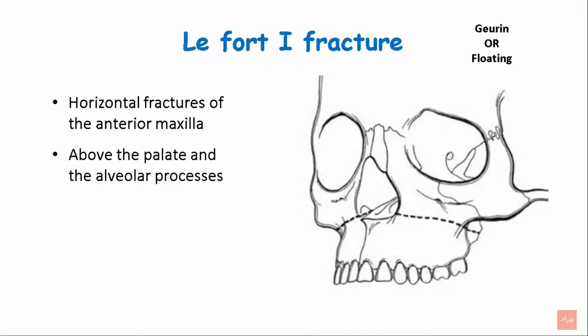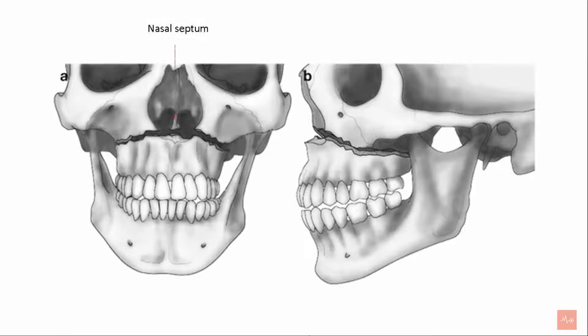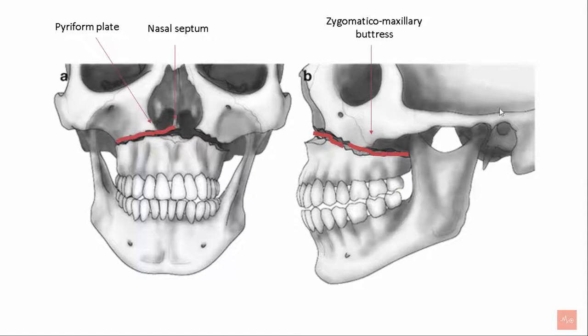These fractures are present above the palate and the alveolar processes, extending through the lateral nasal wall and the pterygoid plates. The LeFort 1 fracture starts from the nasal septum, runs in a transverse fashion involving the piriform plate, extends horizontally over the apices of the maxillary teeth, crossing the zygomatico-maxillary buttress involving the maxillary tuberosity and eventually the pterygoid plates.